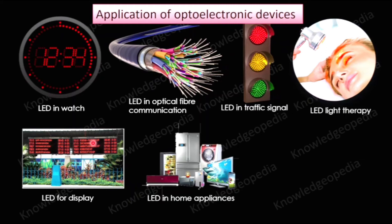Coming to our home, we use different appliances to make life comfortable, and in most home appliances you will find LEDs. In an AC, the sensor that receives the signal from the remote uses an LED. In refrigerators you also find LEDs. Washing machines have display panels showing time or mode of operation — those are also through LEDs. Microwaves have LED displays as well, and your smartphone and TV all use LEDs.